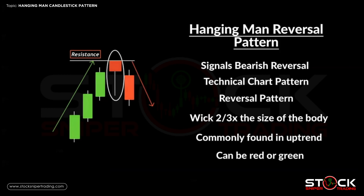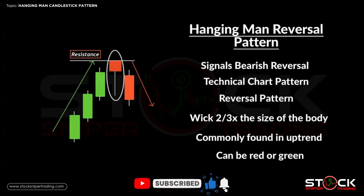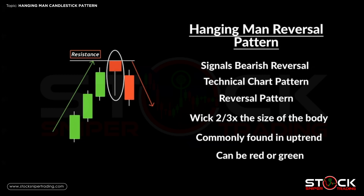The hanging man candlestick pattern is seen as a reversal pattern where it signals a bearish reversal. It is a technical chart pattern. The long lower wick is two to three times the size of the body. It is commonly found in an uptrend and it can be red or green. A hanging man is a bearish reversal pattern made up of just one candle, found in an uptrend of three or more bullish candles. It has a long lower wick and a short body at the top of the candlestick with little or no upper wick.